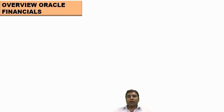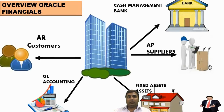Overview of ERP Oracle Financials: ERP Oracle Financials is one of the business applications of EBS. It consists of five modules named General Ledger, Account Receivables, Accounts Payables, Fixed Assets, and Cash Management.